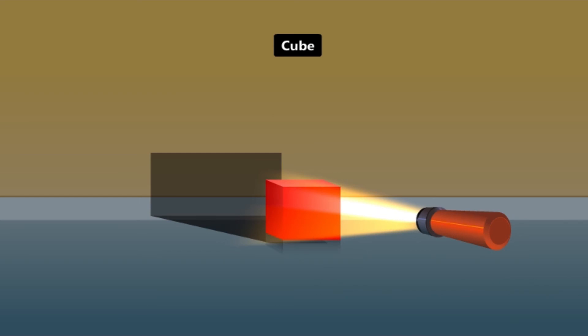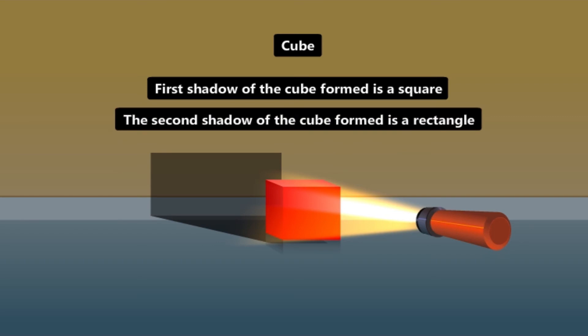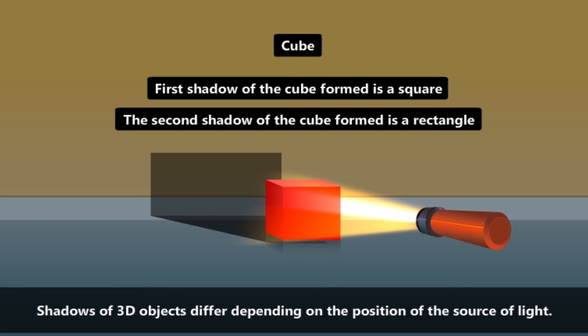We observe that the first shadow the cube formed is a square, and in the second case, the shadow formed is a rectangle. Therefore, shadows of 3D objects differ depending on the position of the source of light.